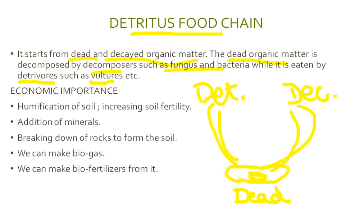One important thing to remember: the grazing food chain and detritus food chain are linked together. First, the dead matter of the grazing food chain is actually the initial source of energy for the detritus food chain. Second, the top-level predators of both food chains are common.